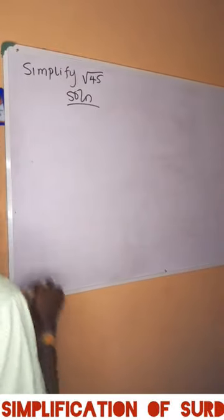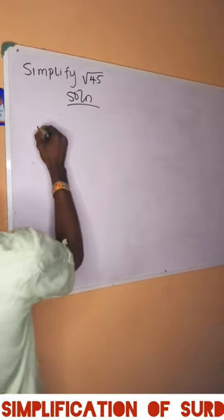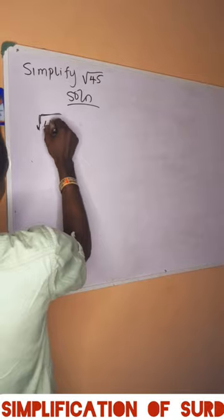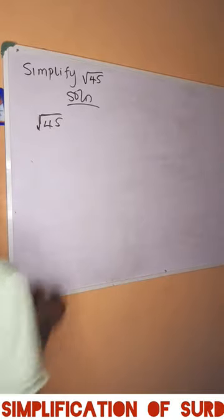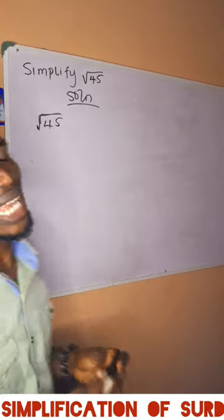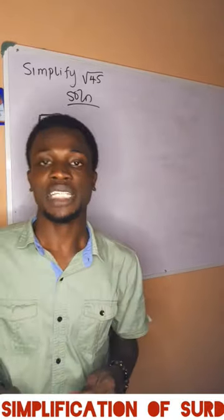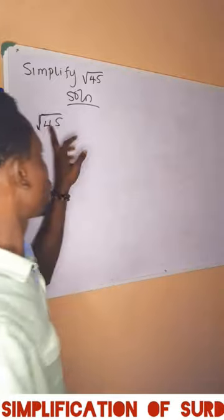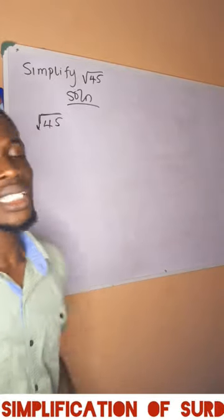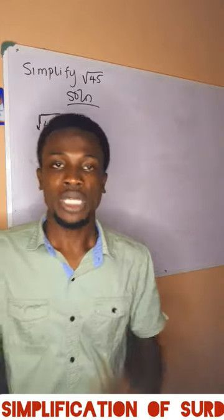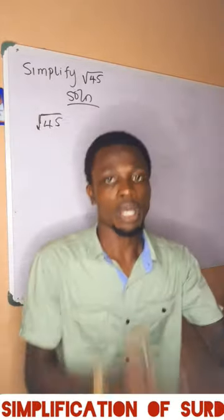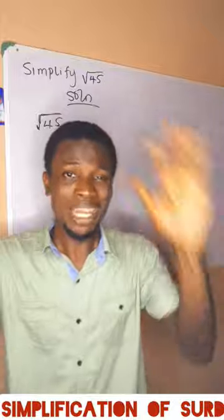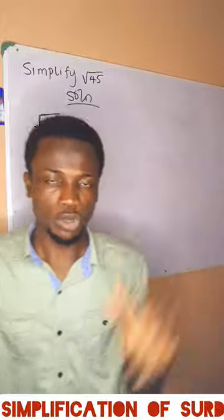Simplify the square root of 445. Now once you see this kind of question and you are asked to simplify, just know that what you need to do is reduce what is inside the square root to a perfect square multiplied by another number. One must be a perfect square.